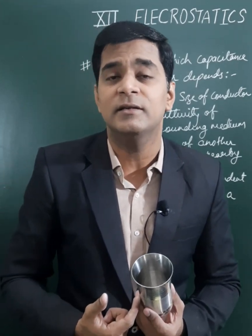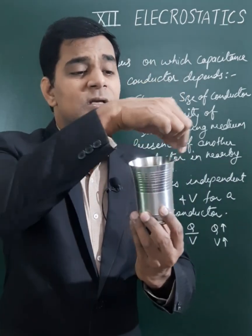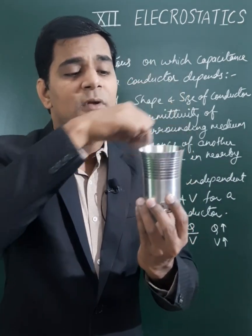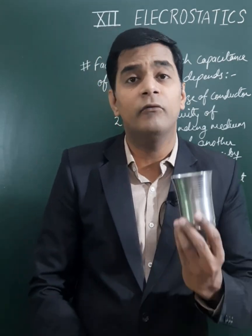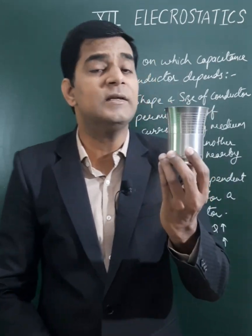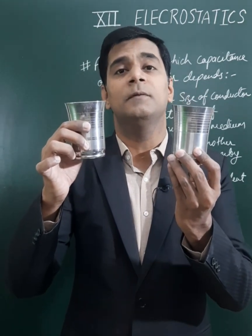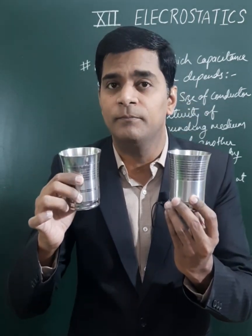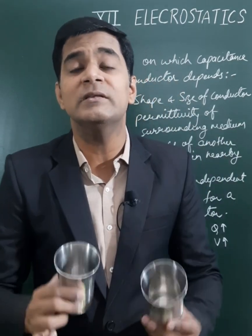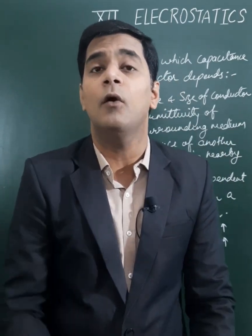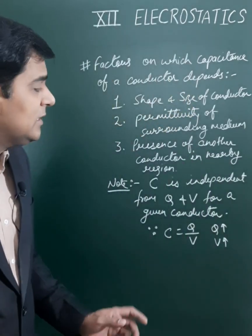The second factor is the permittivity of the surrounding medium in which the conductor is placed. The third factor is the presence of any other conductor in the surrounding medium — capacitance also increases due to the presence of another conductor in the surrounding medium.